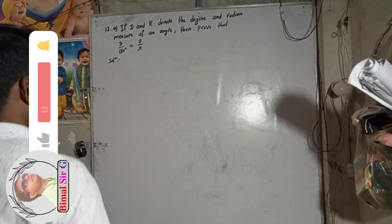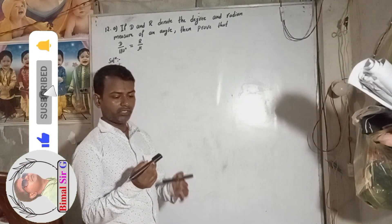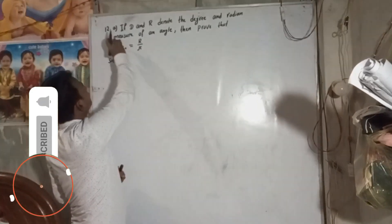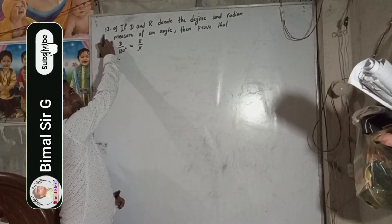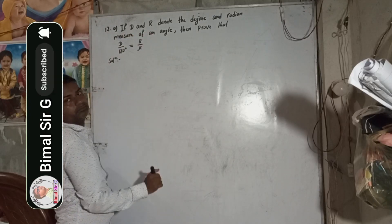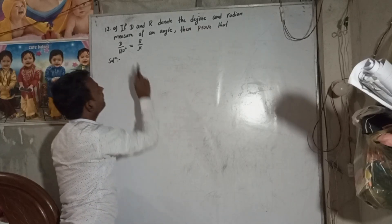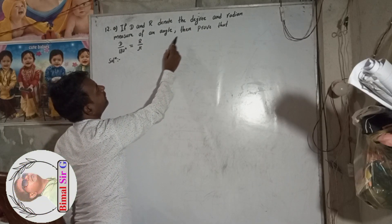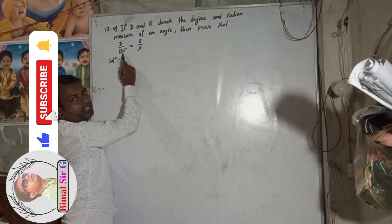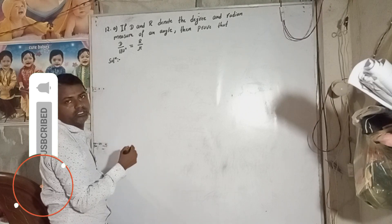Hi everybody, welcome back to Dimasarji YouTube channel. Today I am going to solve OPT Maths. Question 12a: If D and R denote the degree and radian measure of an angle, then prove that D by 180 degree is equal to R by pi.